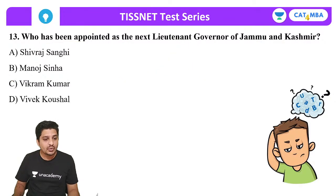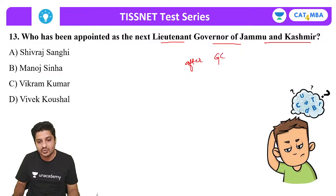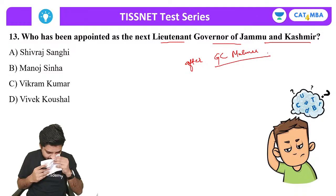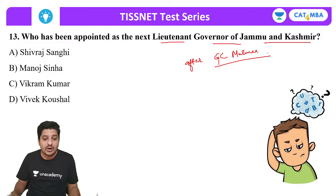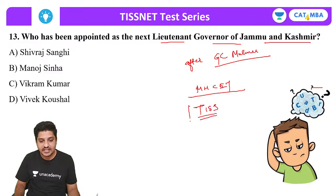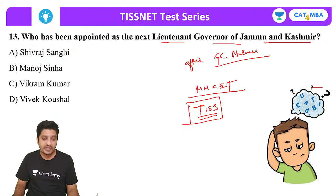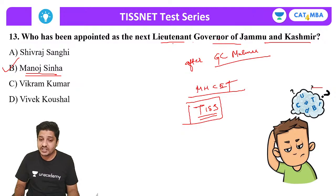Next: who has been appointed as the next Lieutenant Governor of Jammu and Kashmir after G.C. Murmu? Most students answered B. The correct answer is B — Manoj Sinha has been appointed as the next Lieutenant Governor of Jammu and Kashmir.